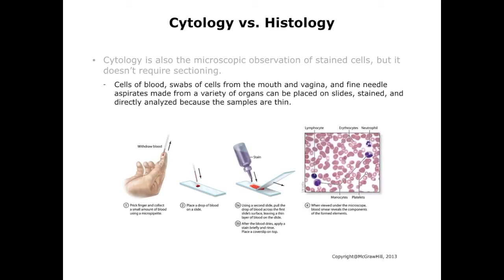This diagram shows the steps involved in making a blood smear, with a micrograph on the right showing stained blood cells. This is a very common procedure. Some of you will get to observe this directly in the course, and we will be looking at smears of blood and bone marrow cells in the lab in a few weeks.